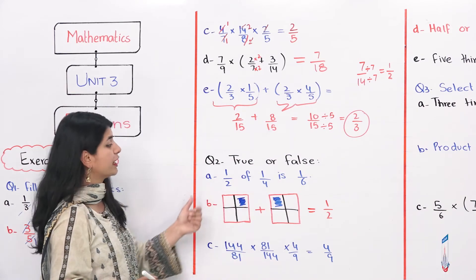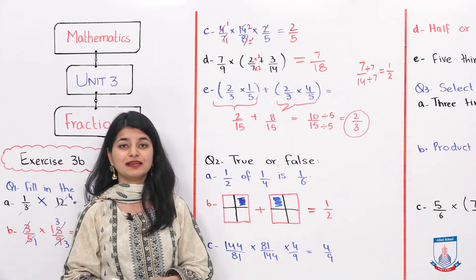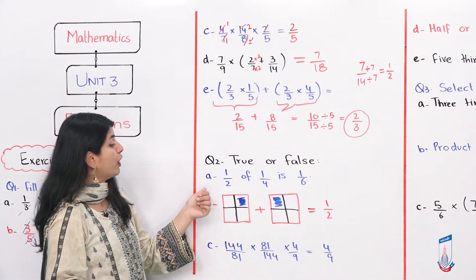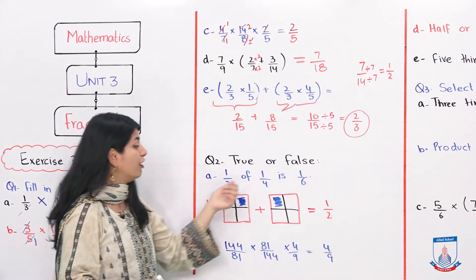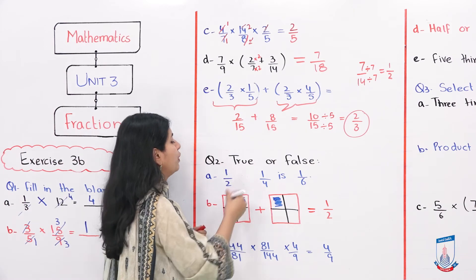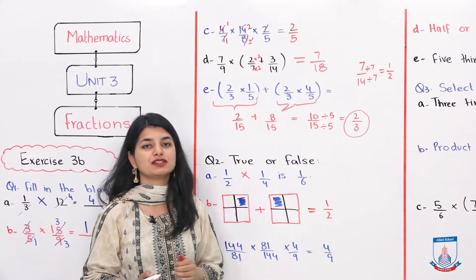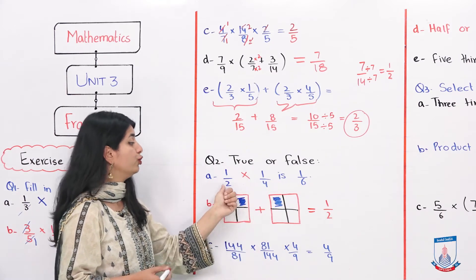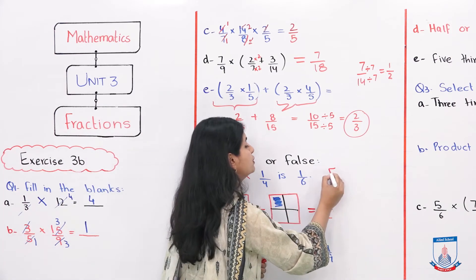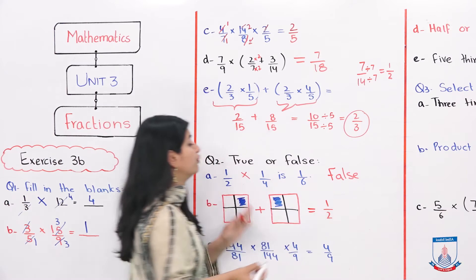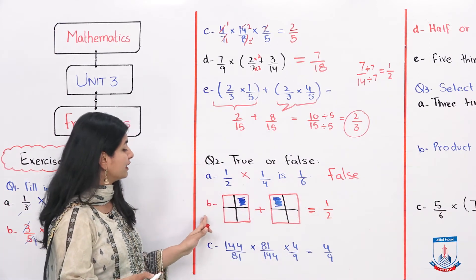Moving to question 2, which is true or false. The first statement says 1 over 2 of 1 over 4 is 1 over 6. 'Of' means multiply, so 1 over 2 multiplied by 1 over 4: 1 into 1 is 1, and 2 into 4 is 8. The answer is 1 over 8, not 1 over 6. So this statement is false.